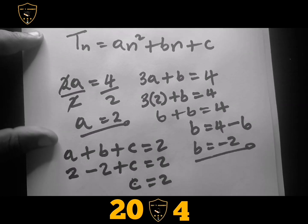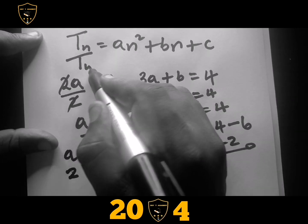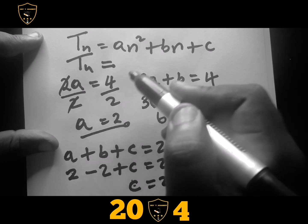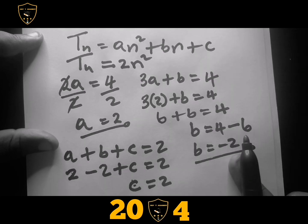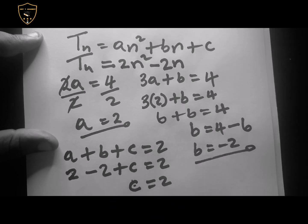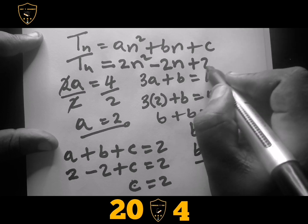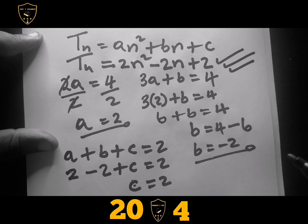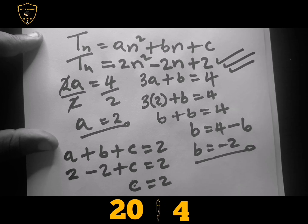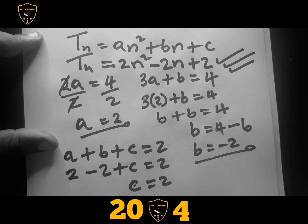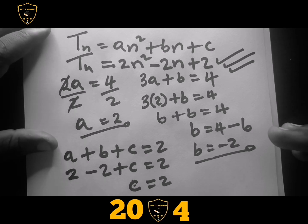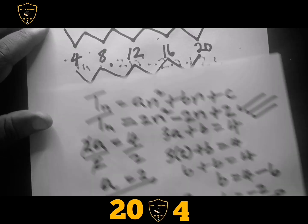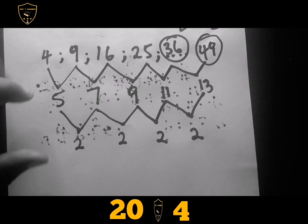Now remember our format: Tn equals an squared plus bn plus c. The value of a is 2, so we put 2n squared. The value of b is negative 2, so we put minus 2n. And c is positive 2, so we put plus 2. This is the end term: Tn equals 2n squared minus 2n plus 2. These questions usually carry four to five marks, so now you know how to find the next two terms and the end term — that's about five percent covered!